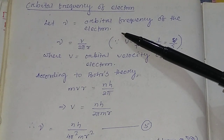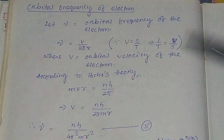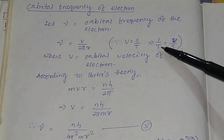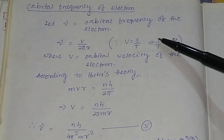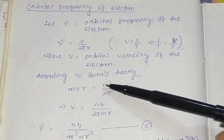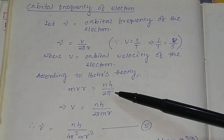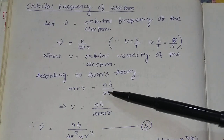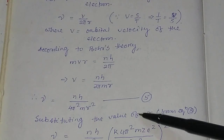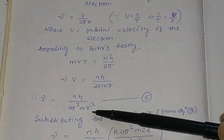To find the orbital frequency ν of the electron: ν equals velocity divided by the circumference of the orbit, that is 2πR, using ν = V / (2πR). Applying the Bohr quantization rule — angular momentum MVR = NH / 2π — so V = NH / (2πMR). Substituting V gives ν = NH / (4π²MR²).